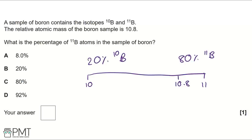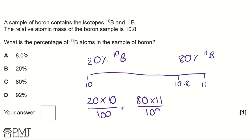We can check this by doing (20 × 10)/100 + (80 × 11)/100. This is how you work out relative atomic mass using isotopes, and this equals 10.8. Therefore our answer is 80%, so C. To get the mark for this question, you need to write C in the answer box.